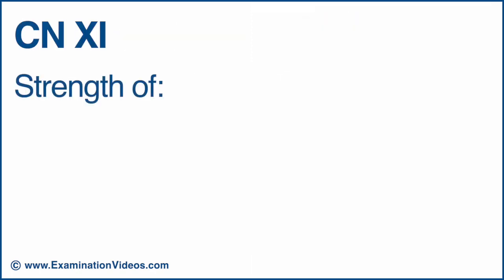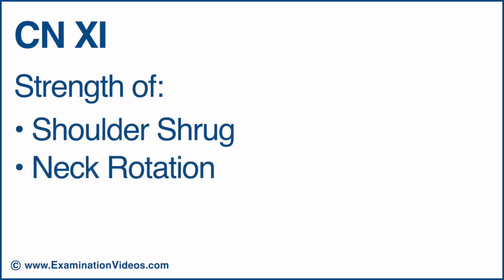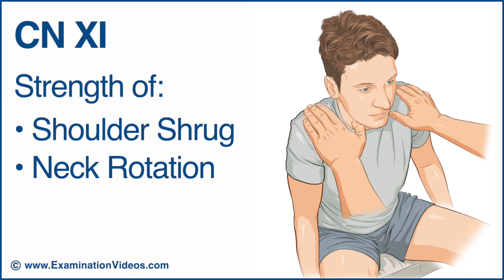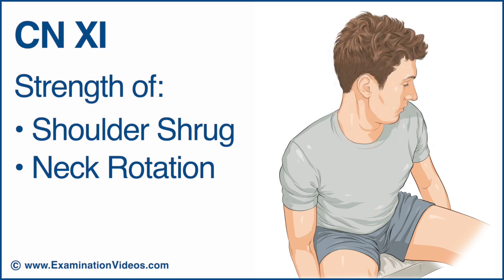To test cranial nerve 11, assess the strength of shoulder shrug and neck rotation. Ask the patient to elevate their shoulders and hold them there as you press down. Compare the strength of resistance on each side. Now ask the patient to turn their head to the right and hold it in that position against your pressure. Repeat on the opposite side and compare the strength of resistance on each side.